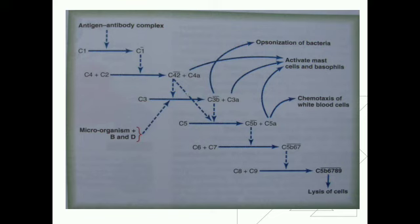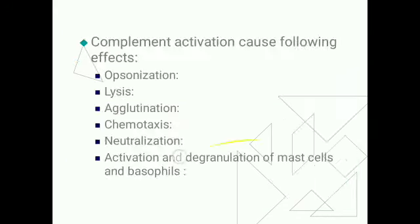Roles of various complement proteins: C3a, C4a, and C5a cause activation of mast cells and basophils. C3b causes opsonization of bacteria. C5a causes chemotaxis of WBCs. C5b6789 causes lysis of the cell.